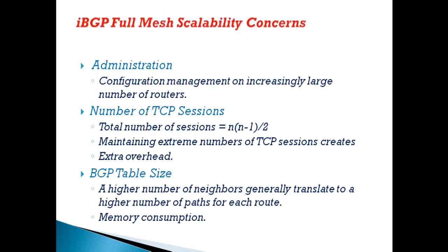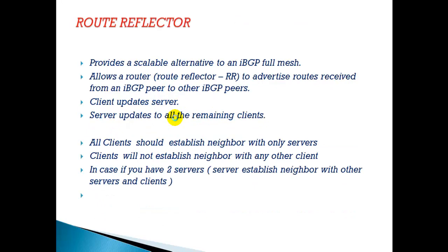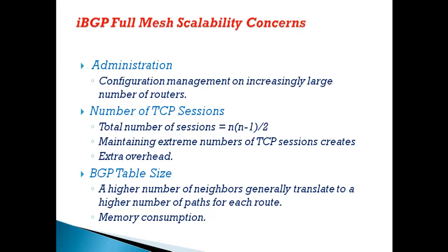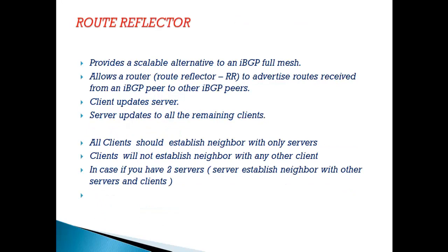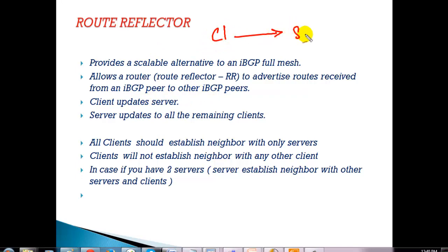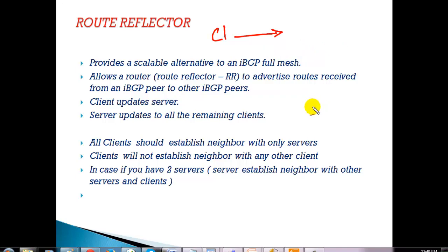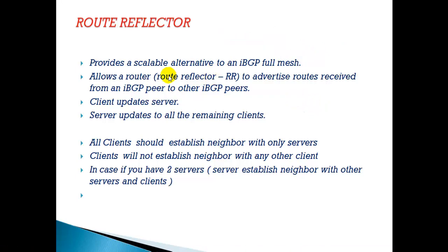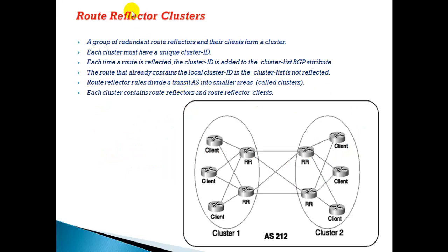If you go with full mesh there are some concerns and issues, so if your transit AS or autonomous system is very big, you either go with route reflectors or confederations. We have also seen some basic IBGP peering using route reflectors. In route reflectors, all clients form neighborship with only the server, and client-to-client neighborship is not required. For redundancy with multiple servers, you can have server-to-server peering. Now we'll get into more detail on route reflector configurations using clusters.